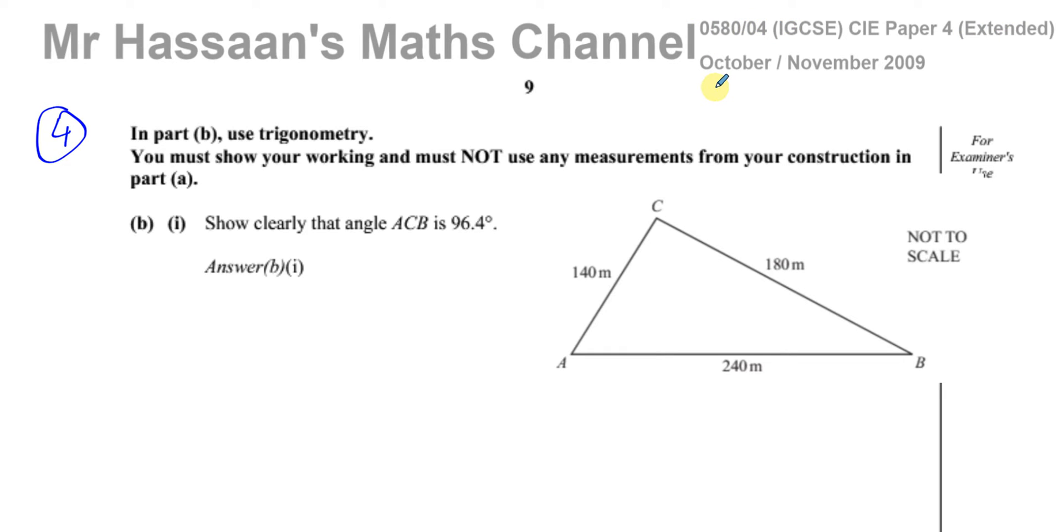And this question here is Part B. Part A was about construction of a triangle and other stuff to do with constructions. Part B is purely about trigonometry and that's why it says in Part B use trigonometry. You must show your working and must not use any measurements from your construction in Part A. So they're asking us to work these out using trigonometry, not by using the drawing or the scale drawing that we made in Part A.